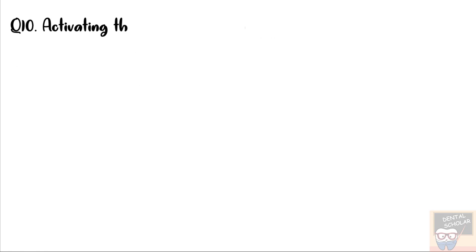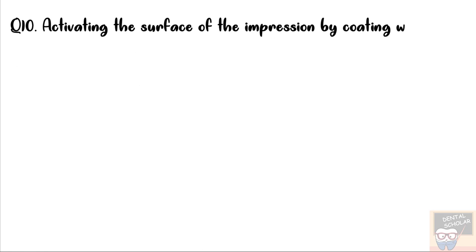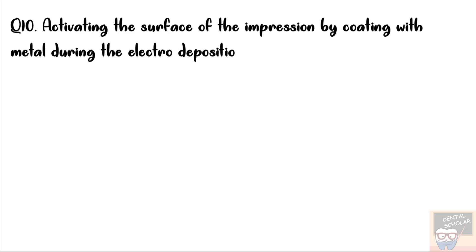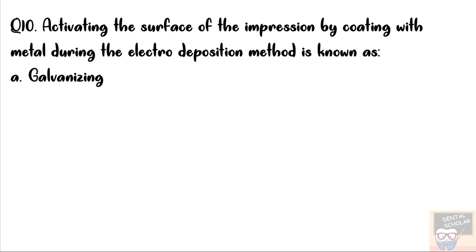Let's now go to question number 10. Activating the surface of the impression by coating with metal during the electro deposition method is known as — the options are: galvanizing and metallizing.